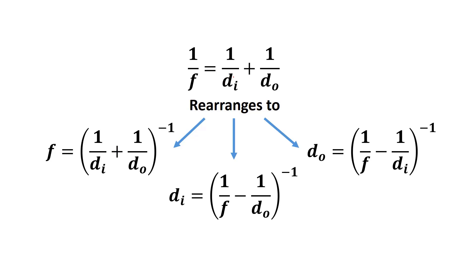When you do the algebra to get DI alone, you have to subtract 1/DO first, so that becomes 1/F minus 1/DO, and then you inverse the whole thing. That's why there's a negative in the middle anytime you're solving for DI or DO — because of the algebra you do to get from the original equation to the rearranged form.